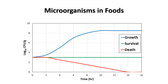When conditions are not suitable for growth, microorganisms can simply survive in food, their numbers neither increasing nor decreasing, as depicted by the green line labeled survival. It is also possible that conditions are harsh or unfavorable, and in this case microorganisms can actually be dying or inactivated in food, depicted by the red line labeled death.